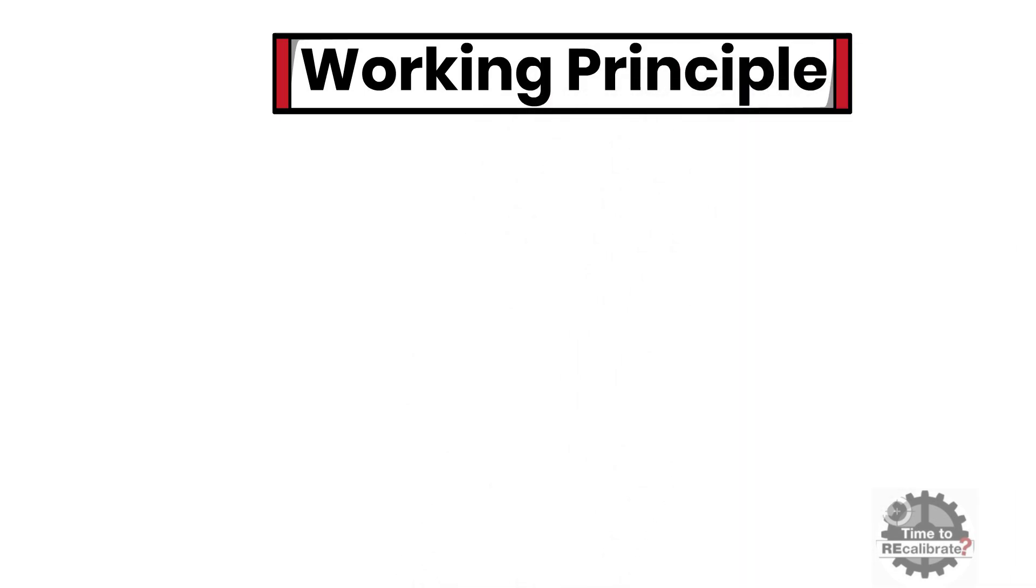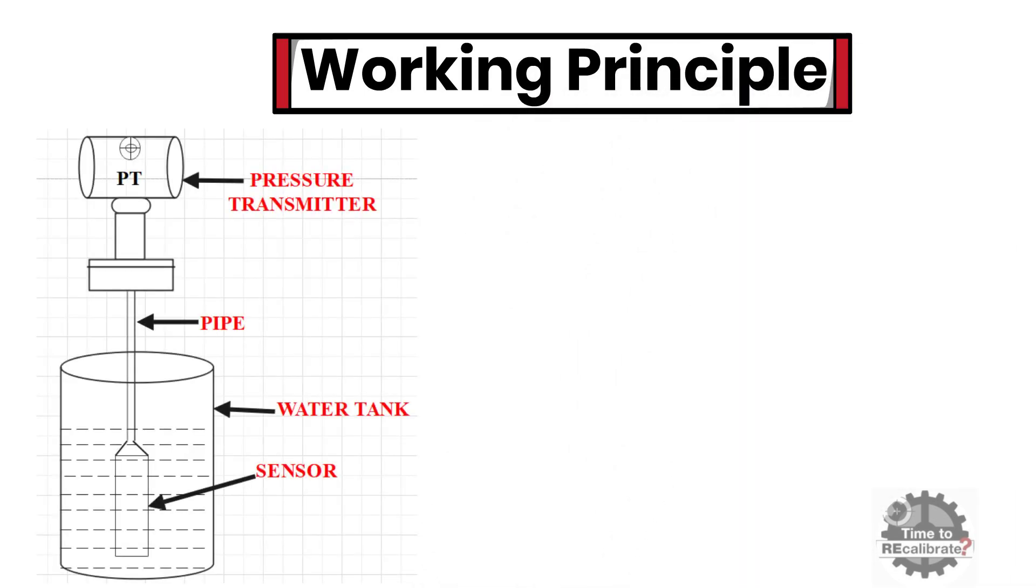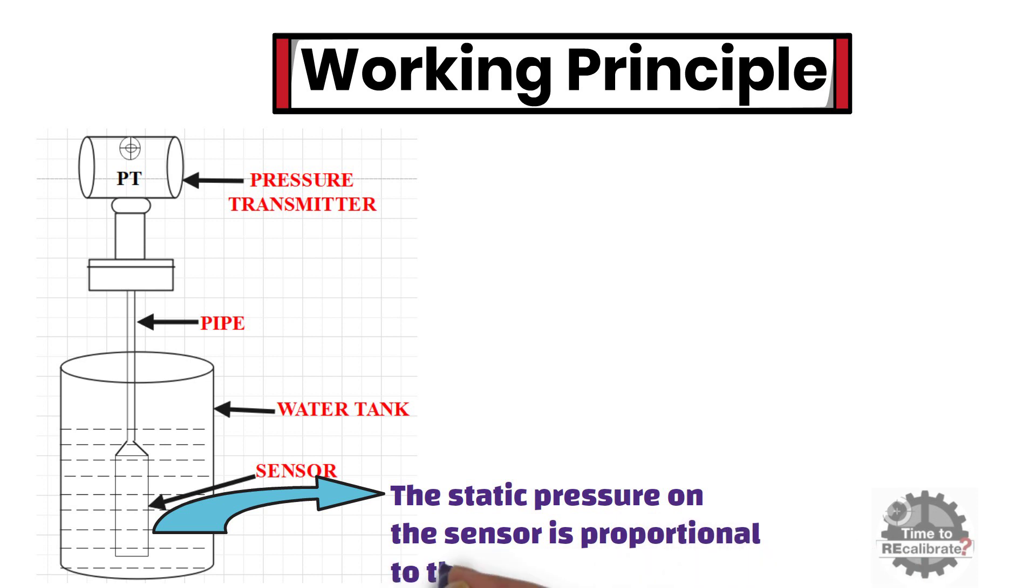Now, let's learn what is the working principle of the submersible pressure transmitter. The submersible pressure transmitter works on the principle that the static pressure on the sensor is proportional to the height of the liquid.